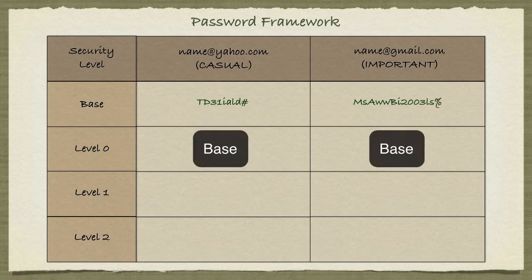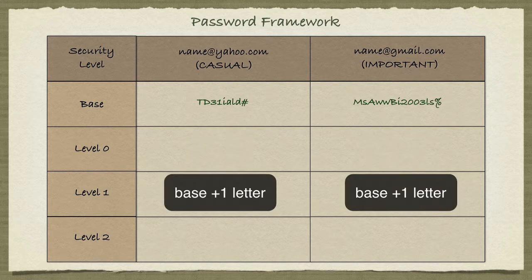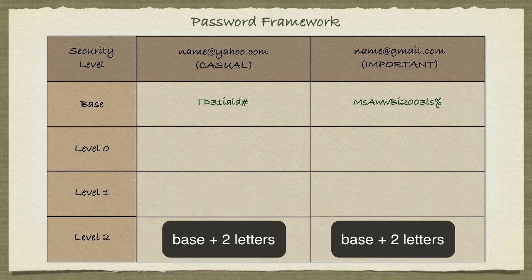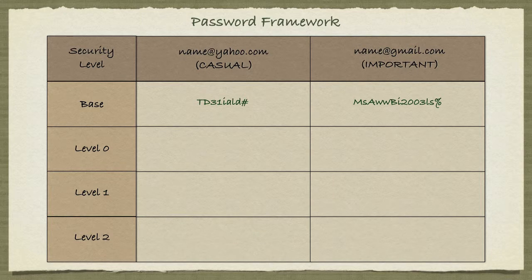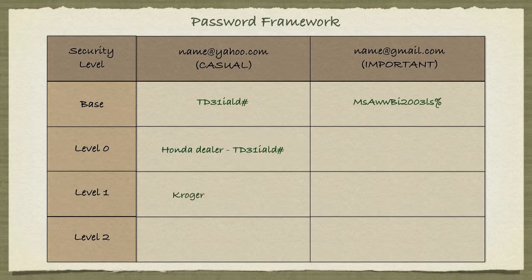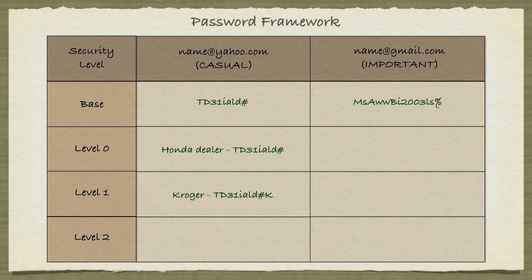For level zero security we simply use the base password. For level one security we append one letter to the password, and for level two we append two letters. For example, if registering for a free drawing at the local car dealership, use the casual ID with level zero security. For the grocery store Kroger, use level one with the casual ID, appending the letter K at the end.